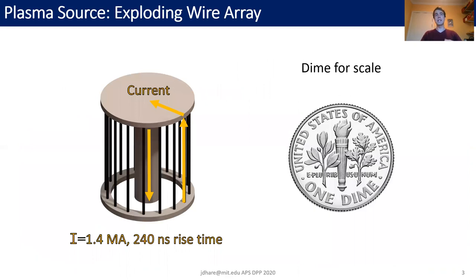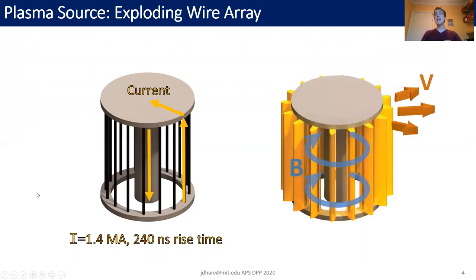Our source of plasma for these experiments is an exploding wire array. This is a cylindrical cage of thin wires surrounding a thick central conductor. The current passes up through the wires and returns to ground through the conductor, and as it does so it ionizes the surface of the wires, creating a coronal plasma which takes a fraction of the drive current.